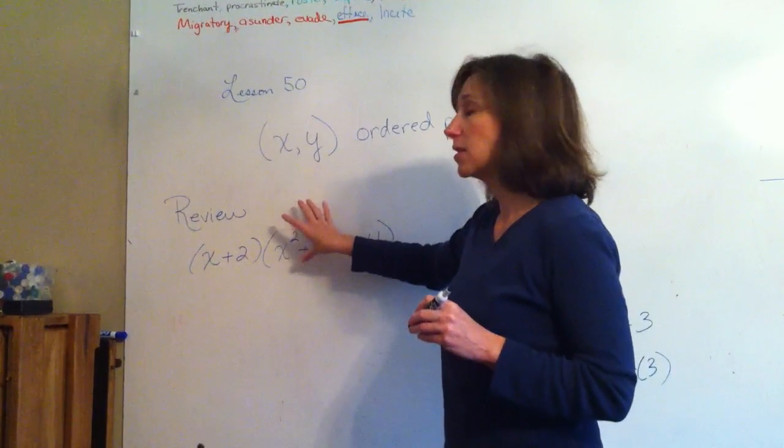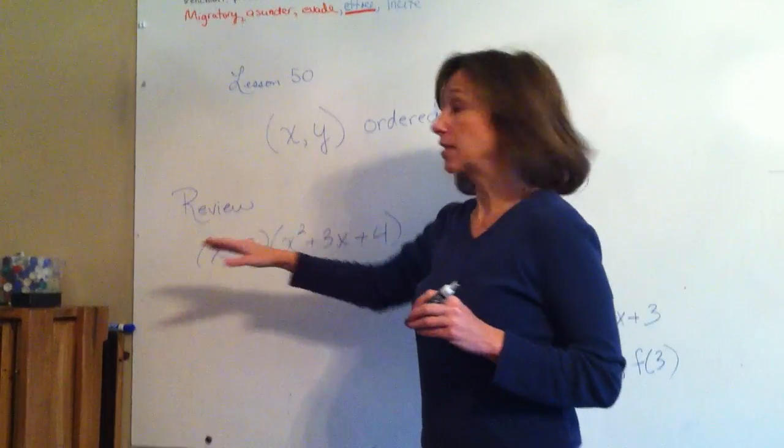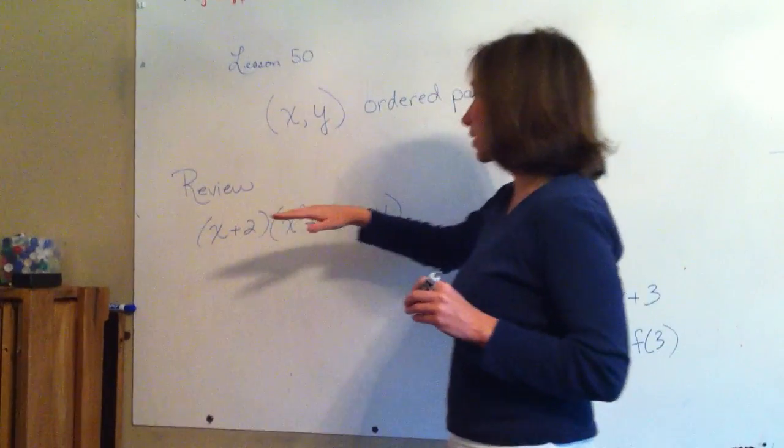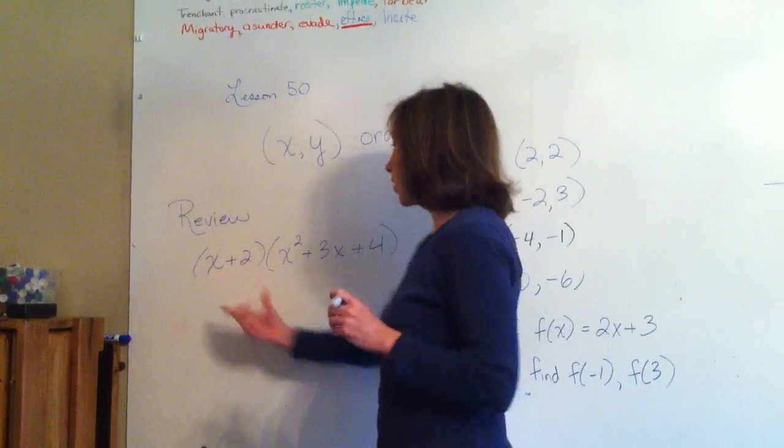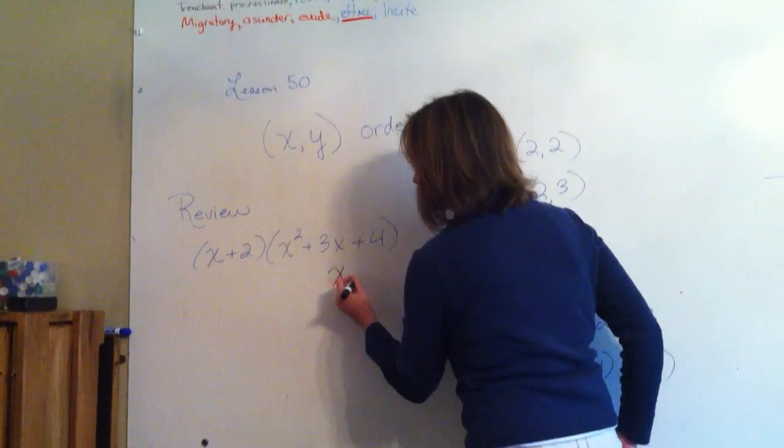I wanted to review something from the last lesson that you might not have gotten. This is multiplying a binomial times a trinomial. So let's review. You take the smaller one and put it underneath the bigger one like that.